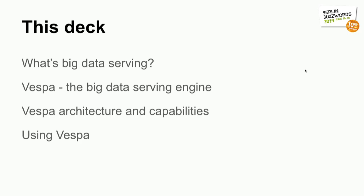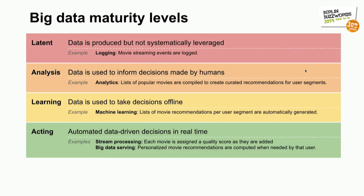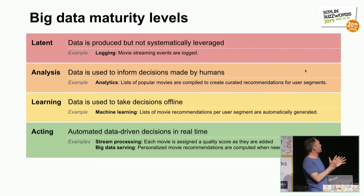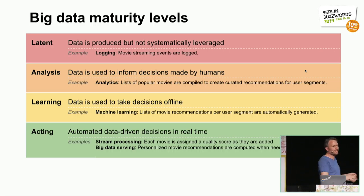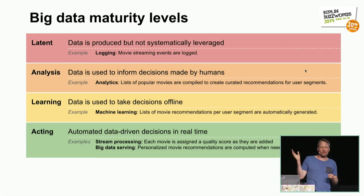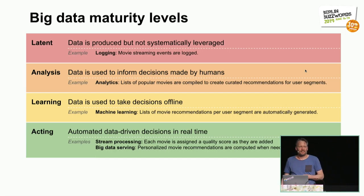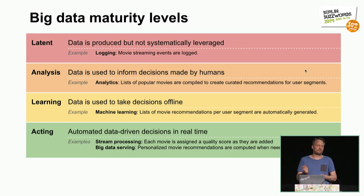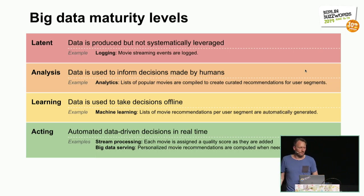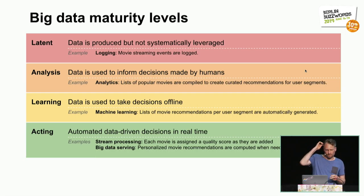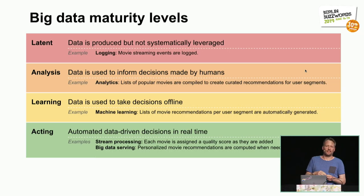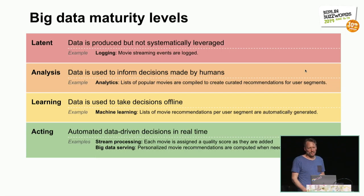This is a lot of slides, so I'll either be talking really fast or skipping some parts. I'd like to start by talking about the big data maturity level. When organizations start out, they usually create a lot of data in logs and so on, but they don't actually use it for anything systematically. That's what I call the latent phase. At some point, they understand that it's useful to look at this data systematically to use it for decision-making — that's the analysis stage.